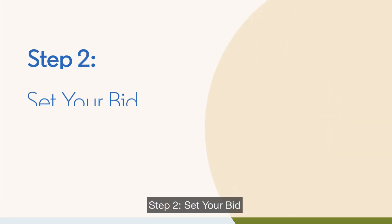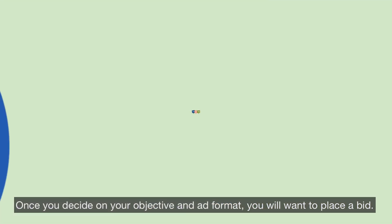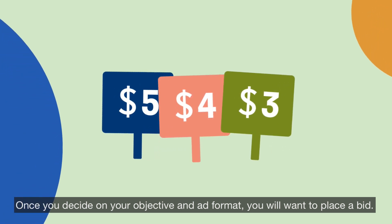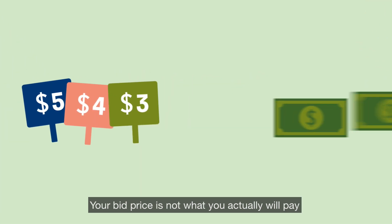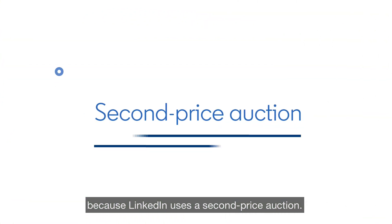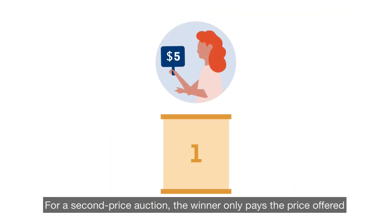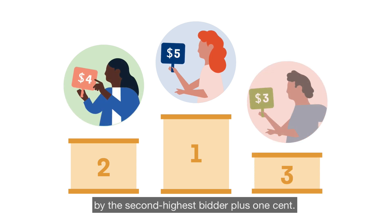Step 2: Set your bid. Once you decide on your objective and ad format, you will want to place a bid. Your bid price is not what you actually will pay, because LinkedIn uses a second price auction. For a second price auction, the winner only pays the price offered by the second highest bidder, plus one cent.